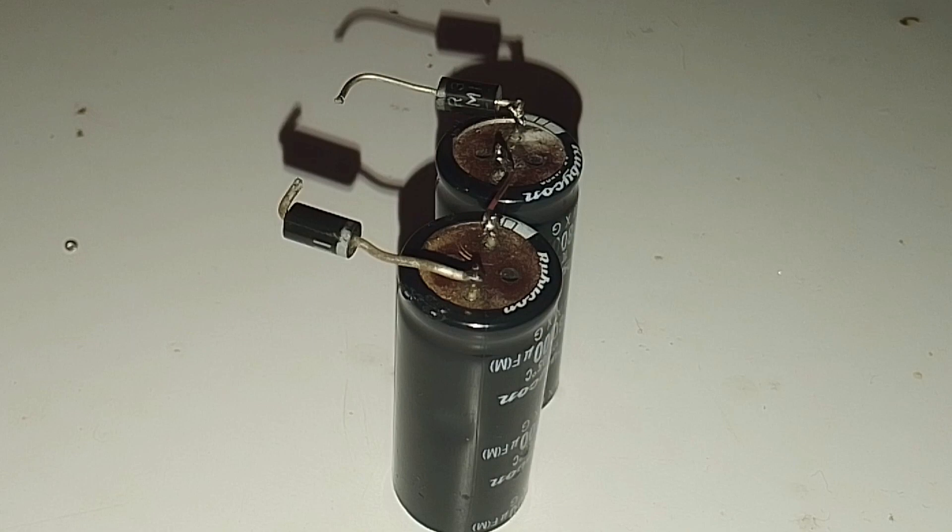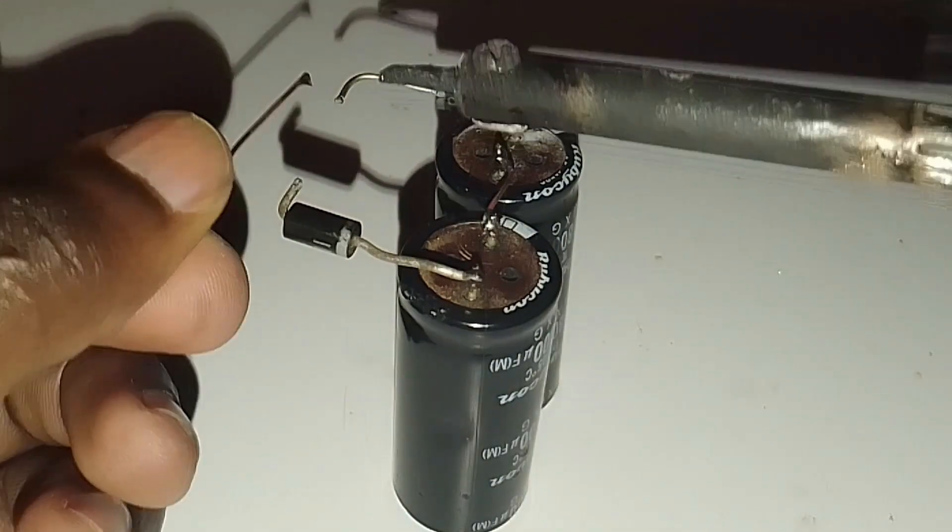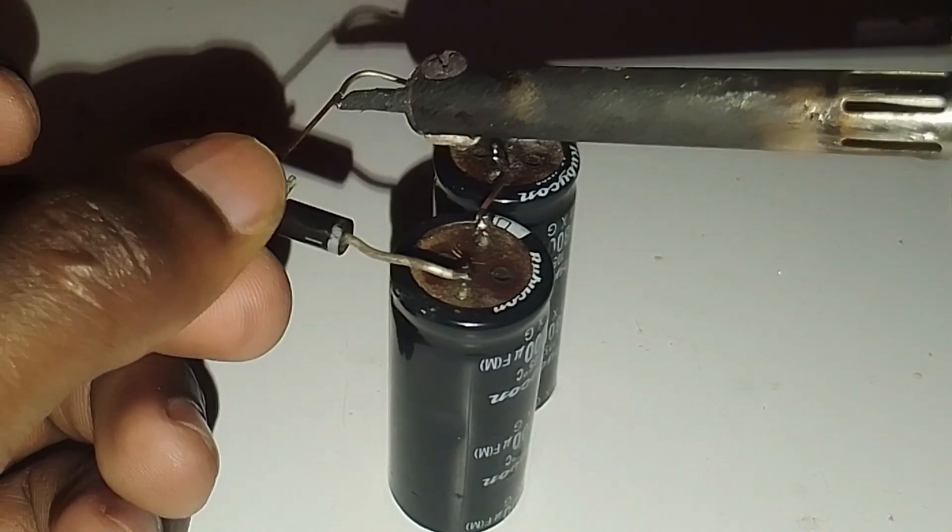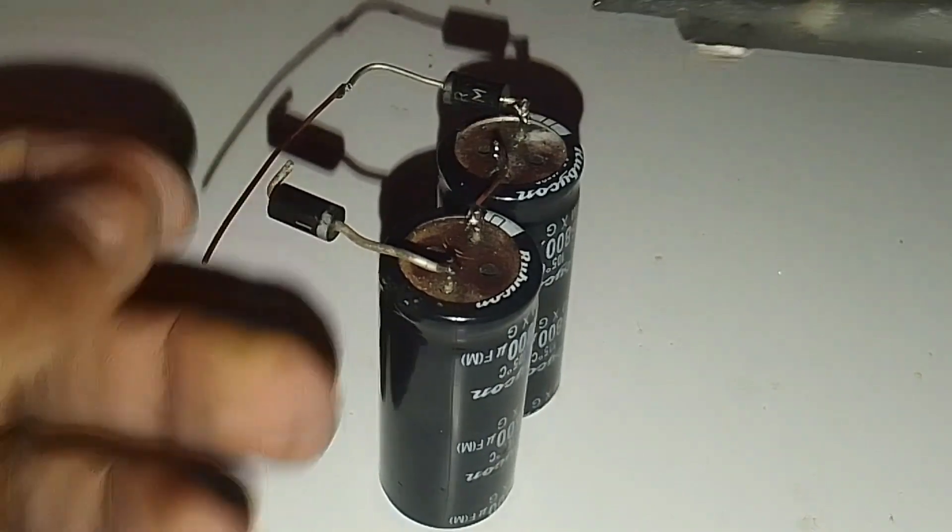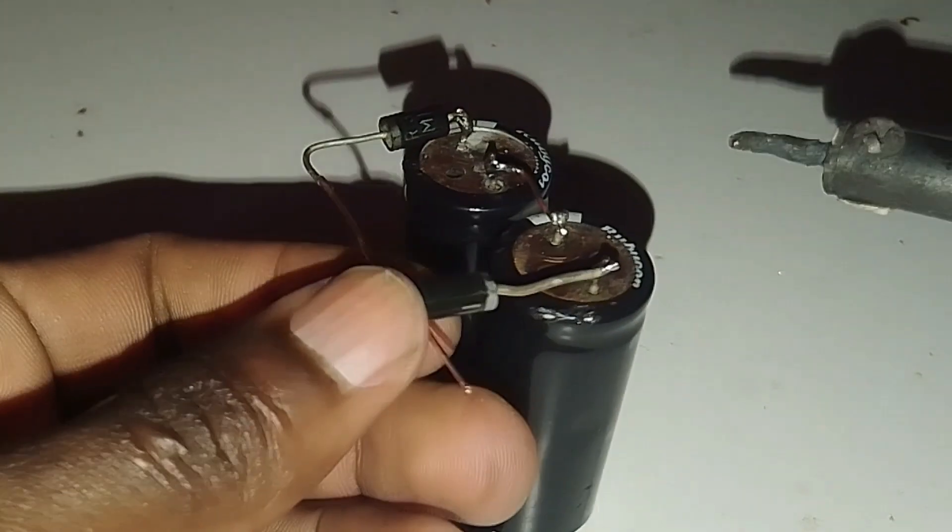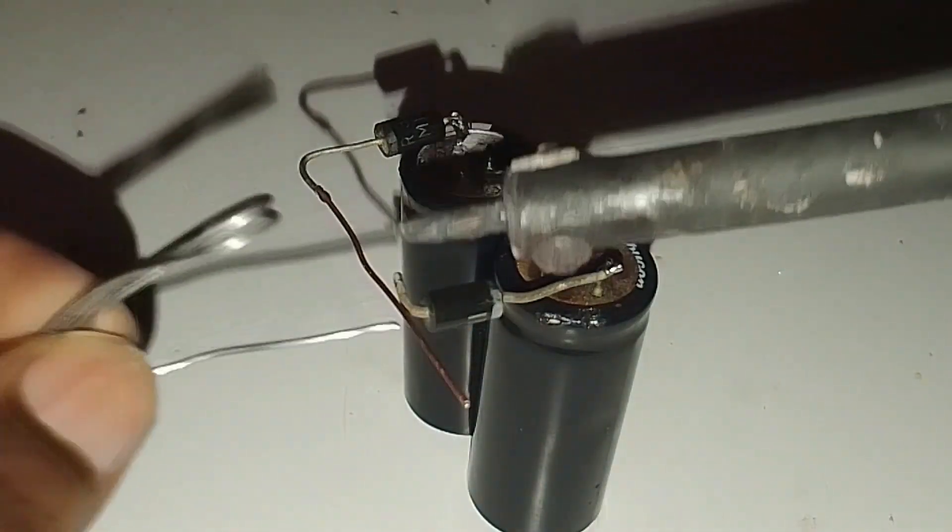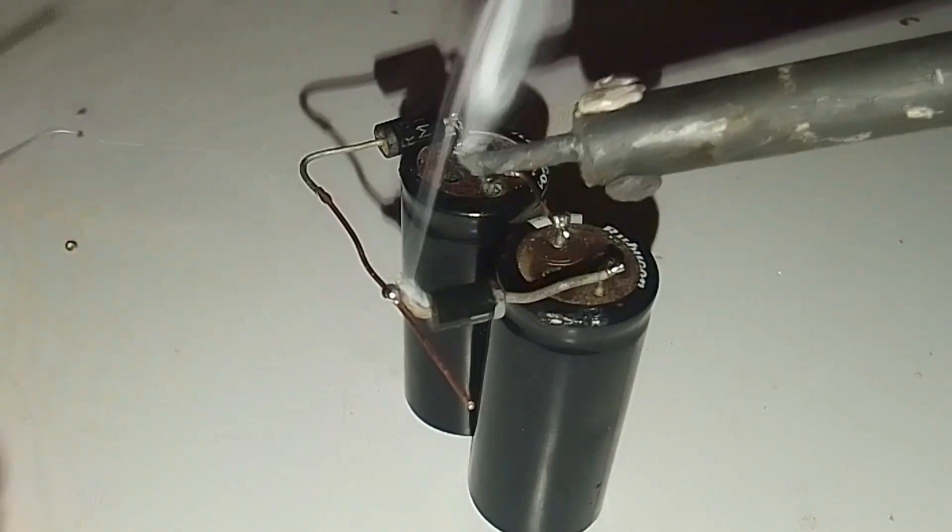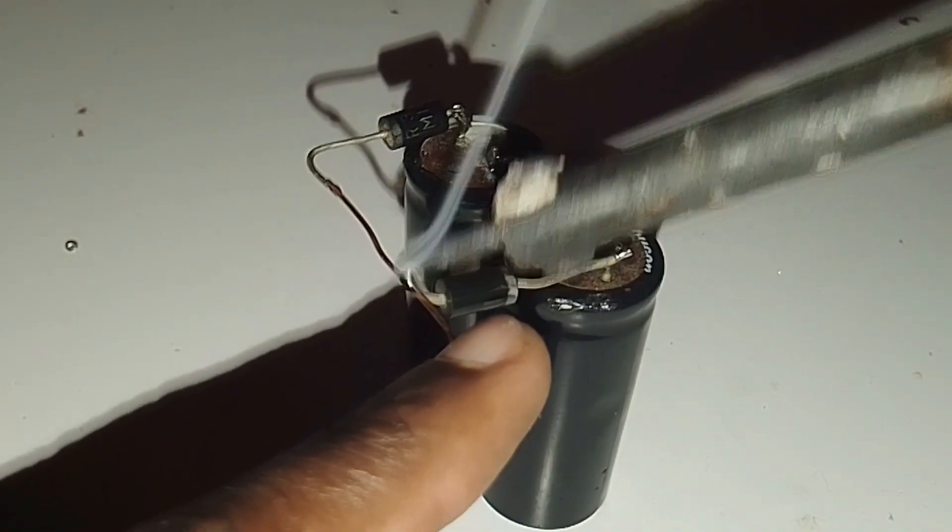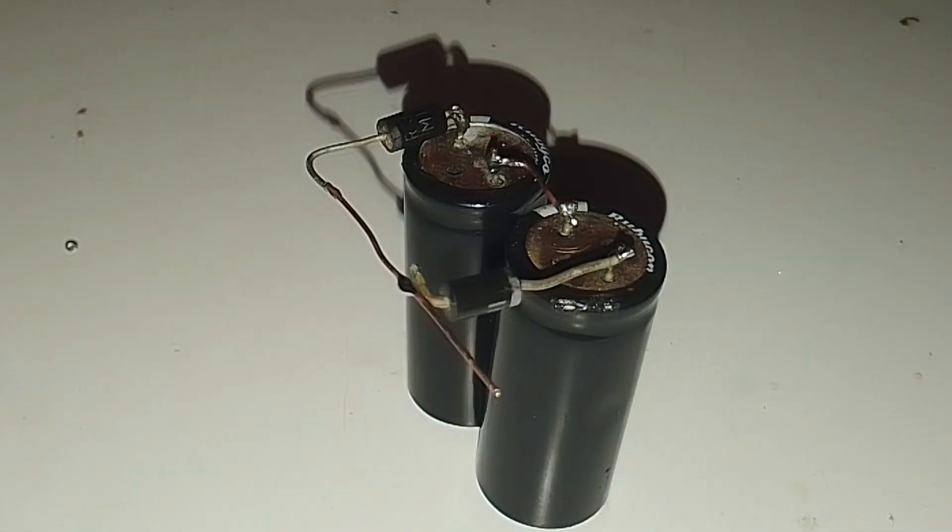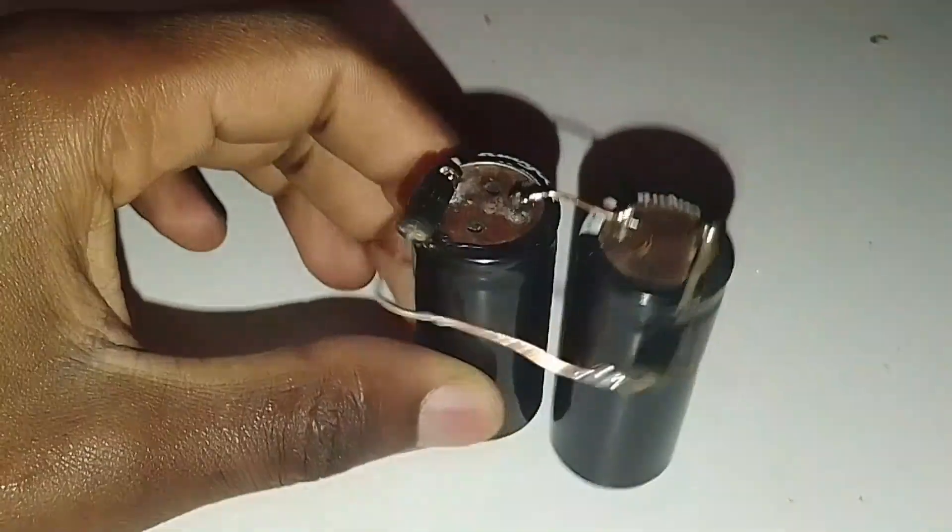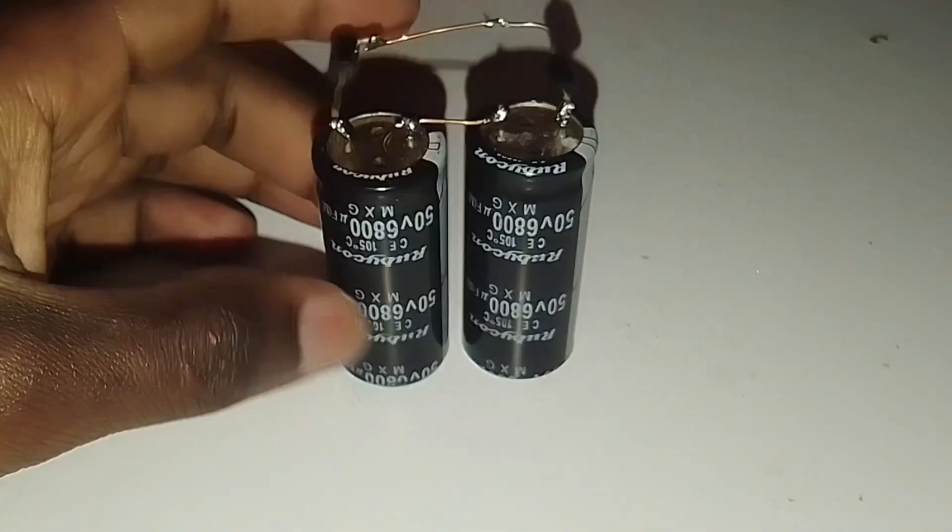From that, we can now connect both ends of the diode. By that, we have now made our voltage multiplier circuit using these two capacitors.